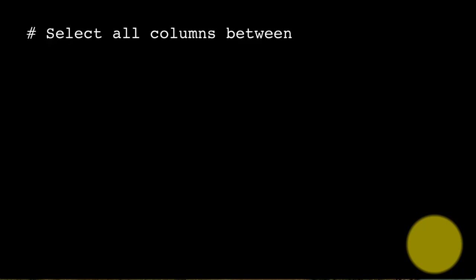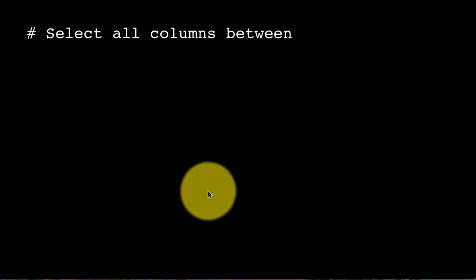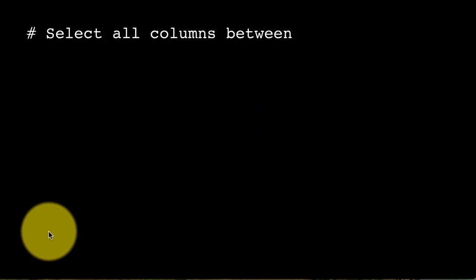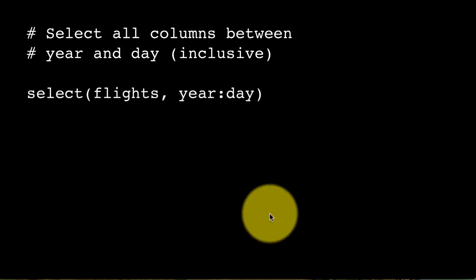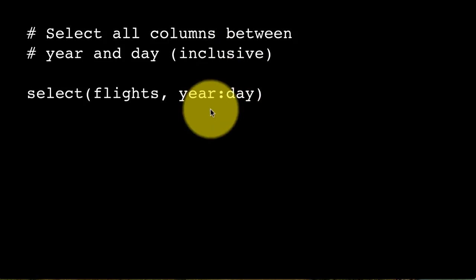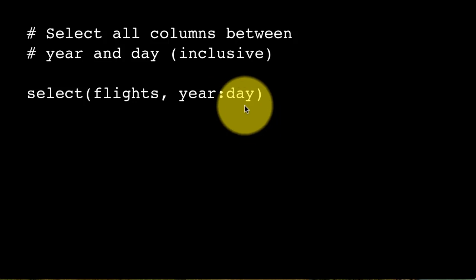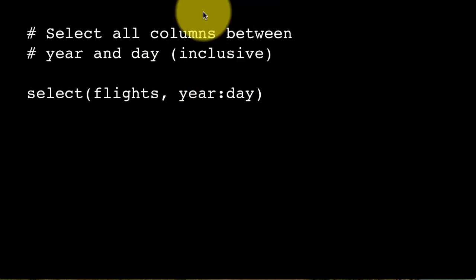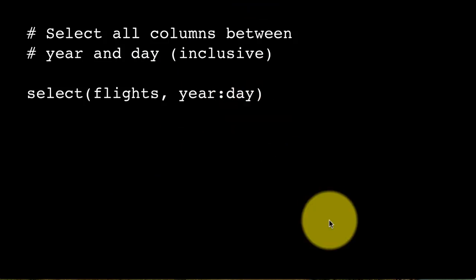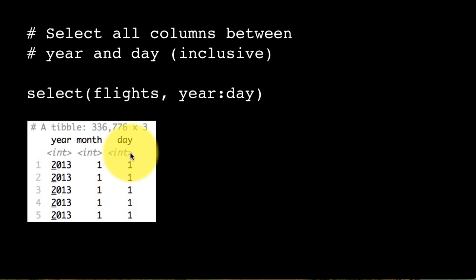When working with very large tables, selecting columns by name alone isn't always sufficient. There's a variant that selects all columns between year and day — meaning in terms of their position in the original table. You can use the colon operator: year:day means start from year and keep selecting columns until you reach day. Just as 1:5 gives the vector 1 through 5, year:day gives the range of columns year through day. You get the same result because year, month, and day are contiguous columns.